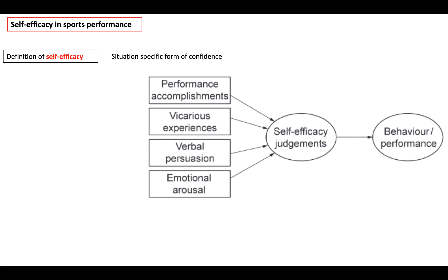We're going to use a penalty in football as our example, as we used it with sports confidence. According to Bandura, expectations of self-efficacy depend on four types of information: performance accomplishments, vicarious experiences, verbal persuasion, and emotional arousal. These four sources can influence our self-efficacy.